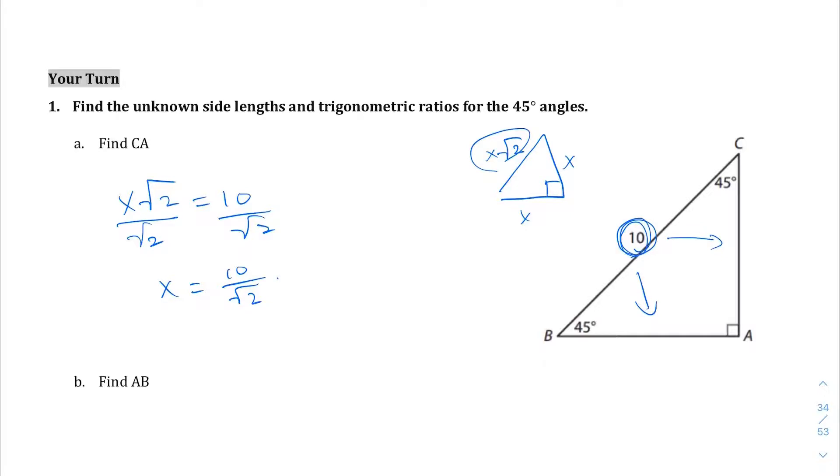What we're going to do is keep it equal but get that radical out of the denominator by multiplying both the numerator and denominator by √2. √2 times √2 equals 2 because that pops out of the radical sign.